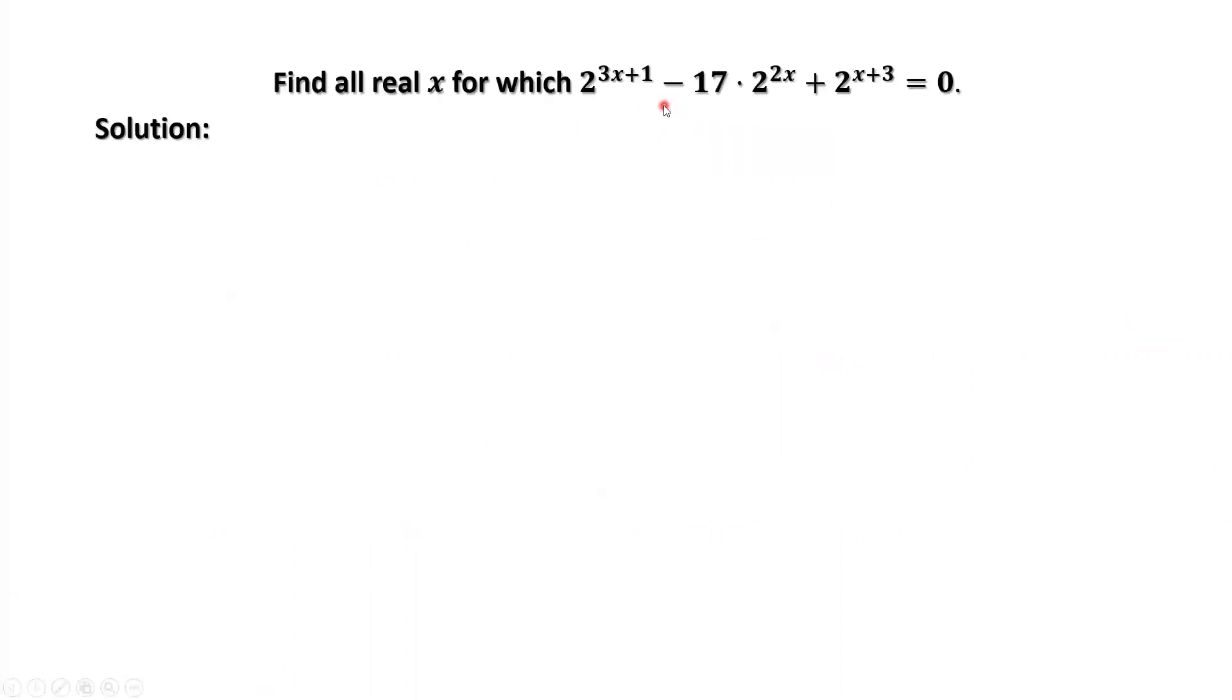This is a power equation. We do not have a formula to solve power equations. From the left-hand side, we can see that 2 to the power of x is the common factor for the left-hand side. Therefore, we can factor 2 to the power of x out.